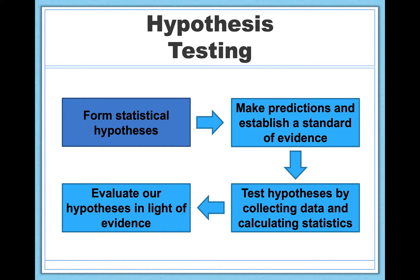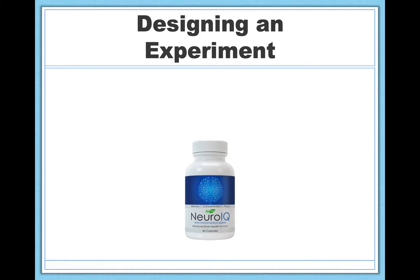So let's start with forming your statistical hypotheses. I'm going to start with an example. Here's this supplement called NeuroIQ. It is not FDA-approved. It makes no specific claims. You can see it lists memory, concentration, and focus here. It doesn't say that it necessarily improves those things. It just mentions them. It doesn't make any claims about IQ, but it is very suggestive that it should improve your IQ. So here's my question as a researcher: Does this supplement, NeuroIQ, actually change people's IQ?